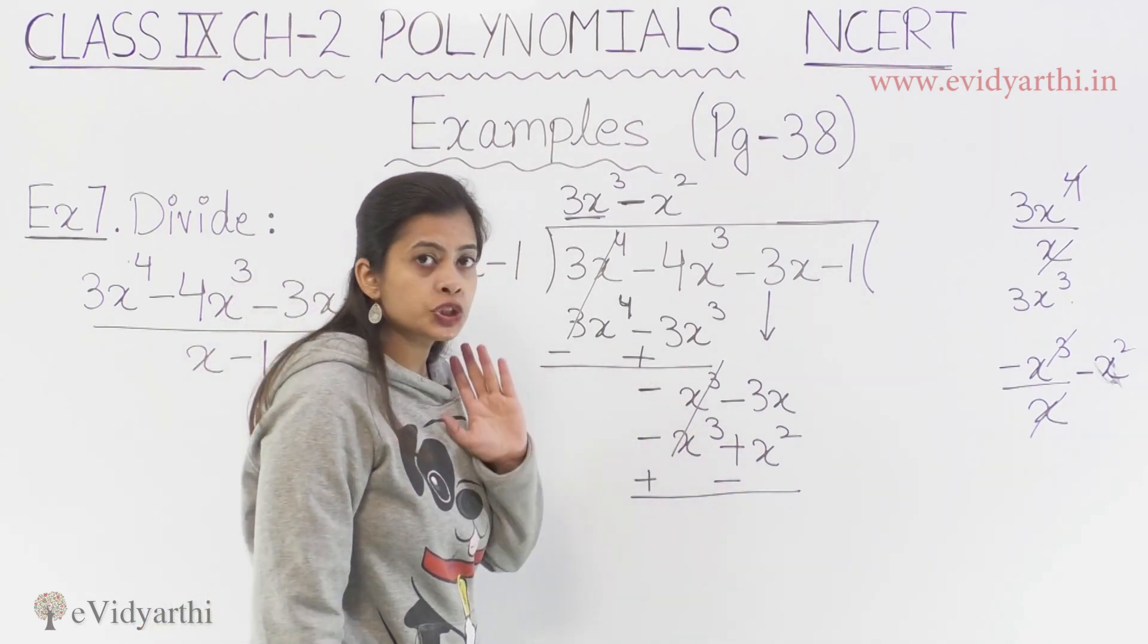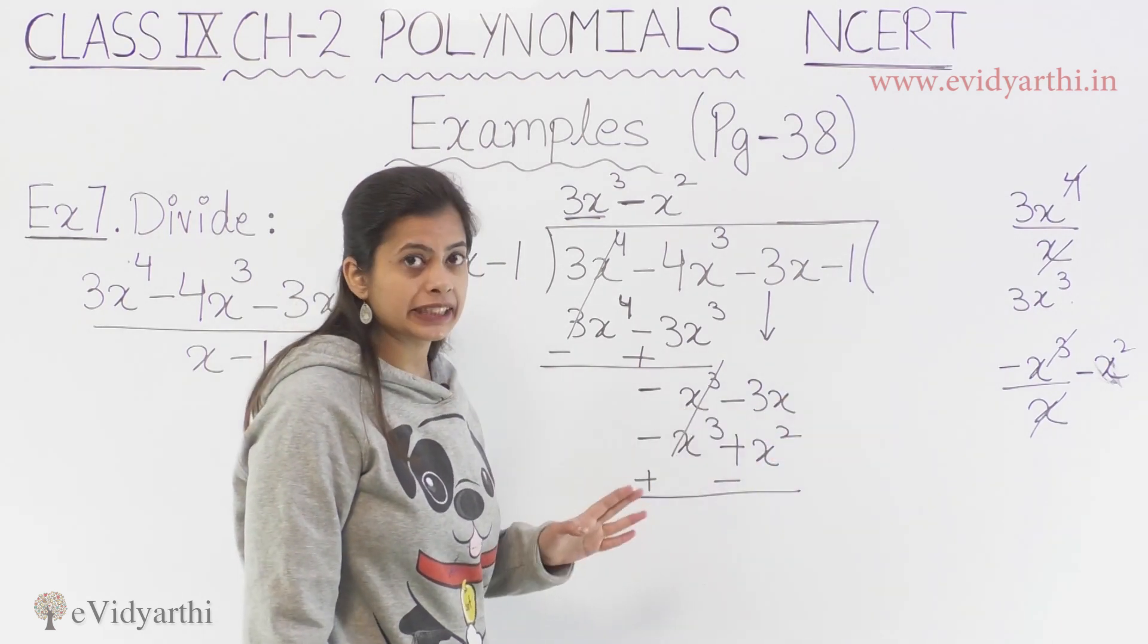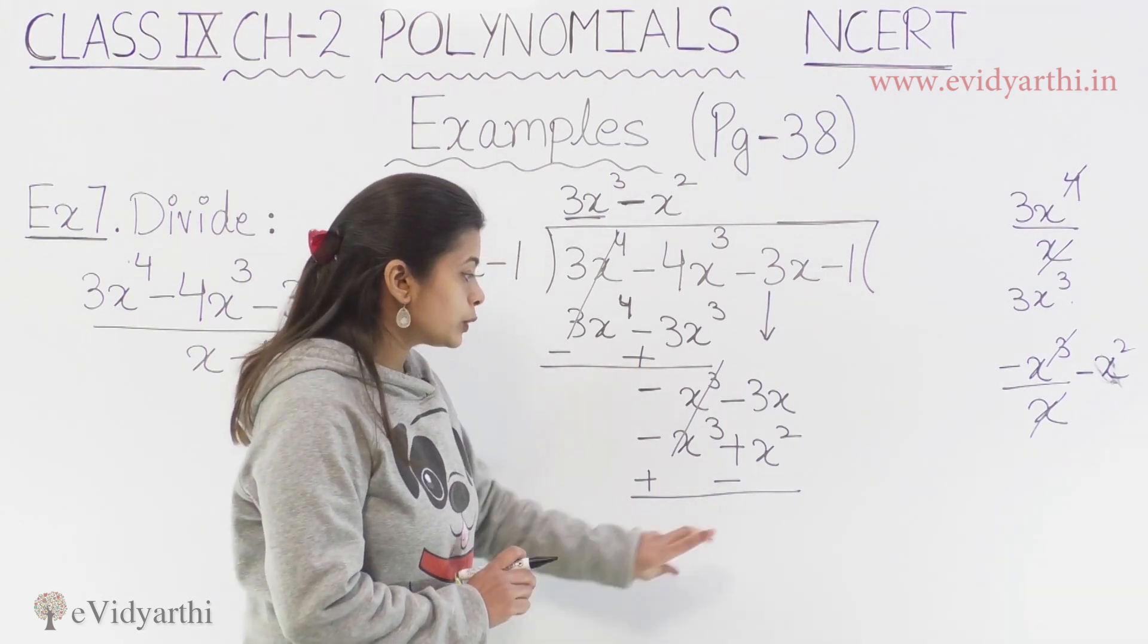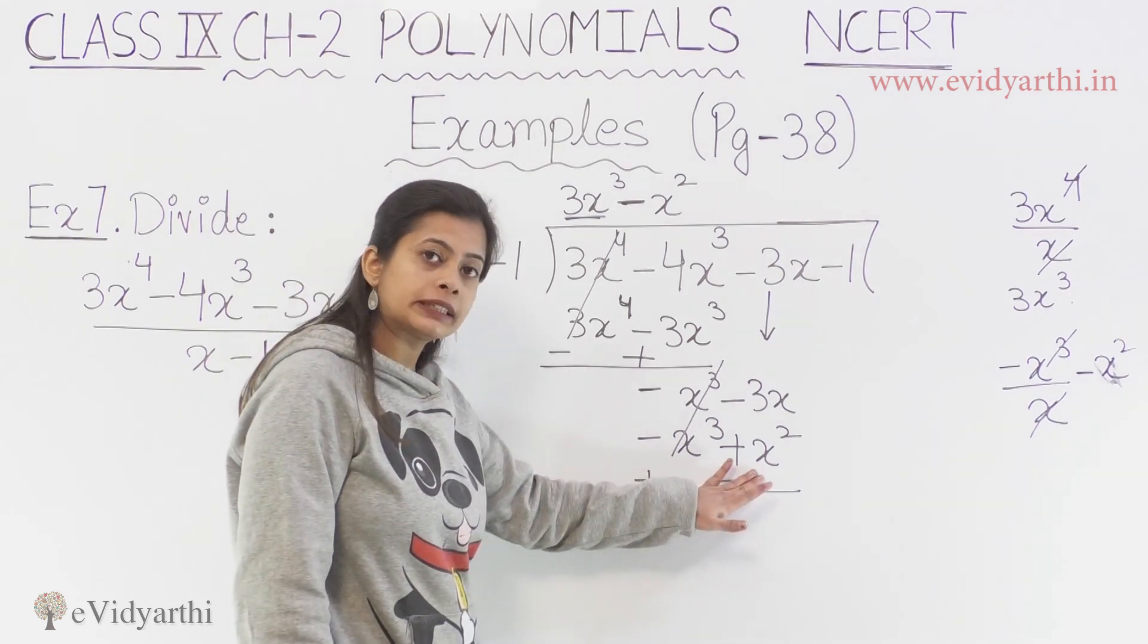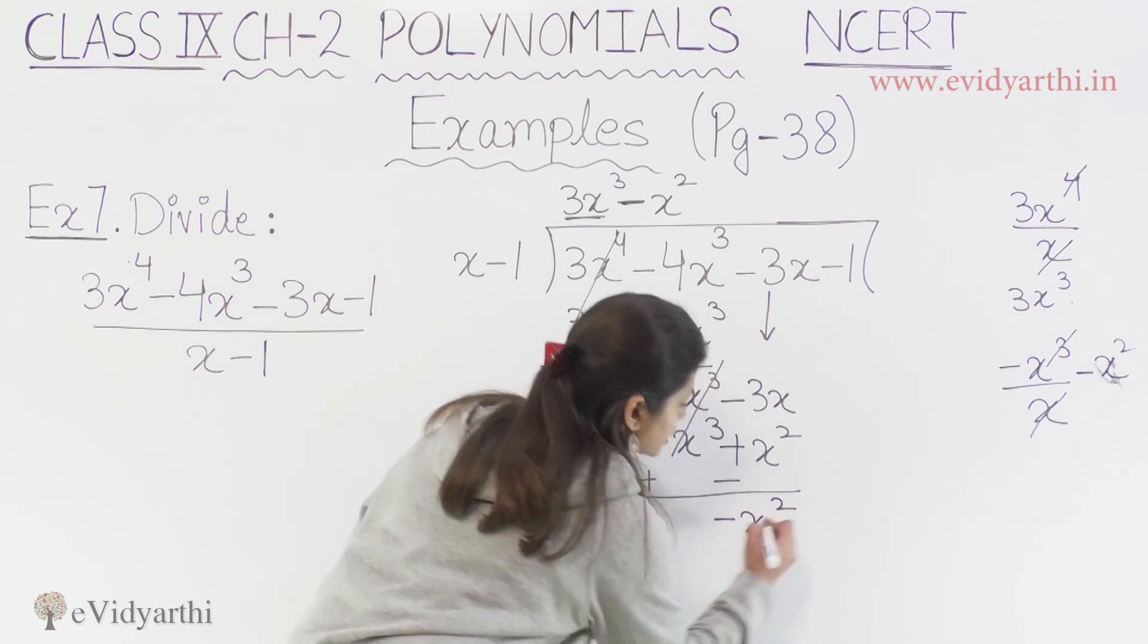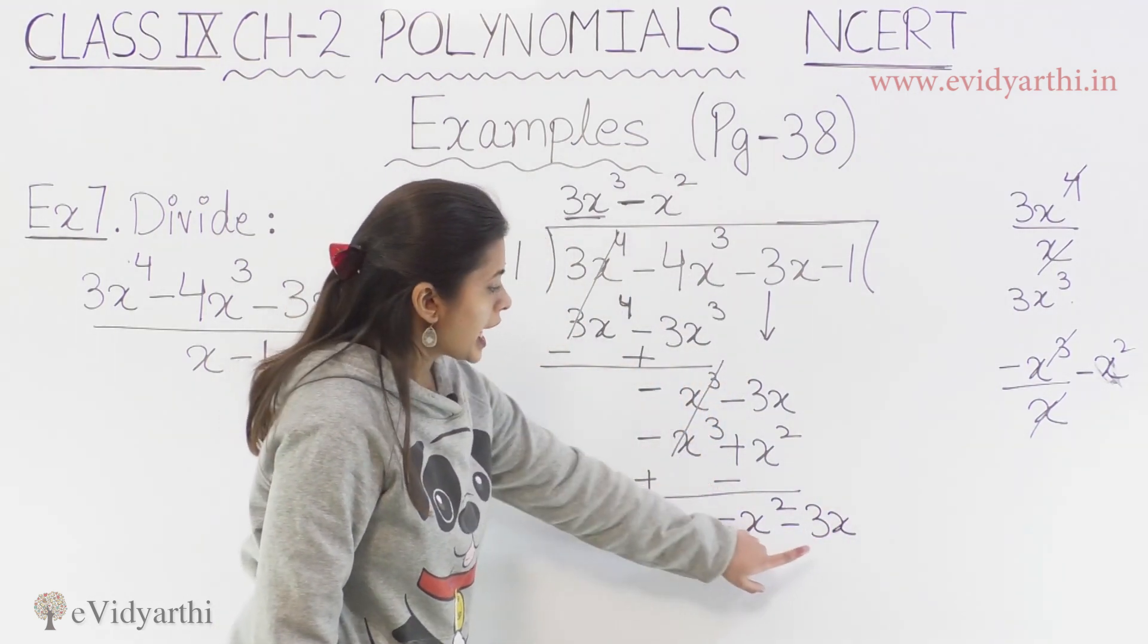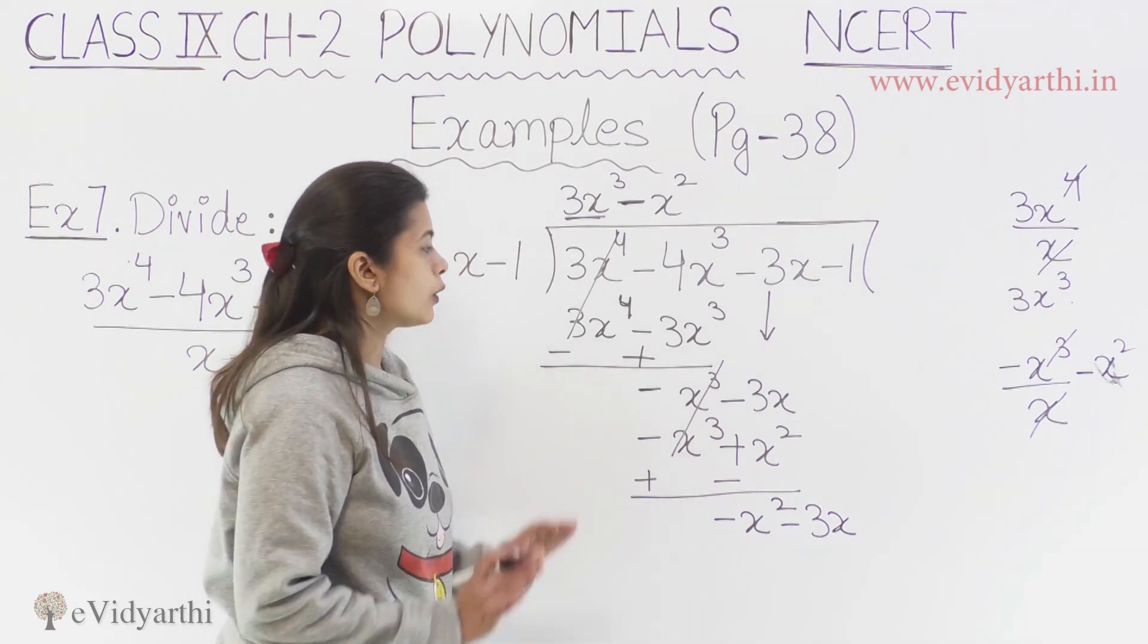But here we have something strange. Here we have x square here and the other term is x. Both are different. That means that we cannot operate it. So, what we will do is simply write them in order. We will write x square term, then we will write x ka. So, we will write here minus x square and our minus 3x. This is our term x square term minus, and then we have the next term as minus 3x. Now, moving on.